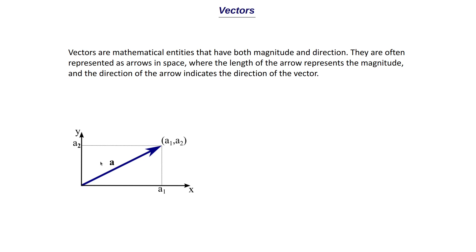Here we have this arrow with a value 'a', which represents the magnitude — let's say that magnitude can be five or six units — and then we have this direction pointing towards it. If you take the angle, let's say 45 degrees, that would be the direction. This is how you represent a vector, with coordinates a1 and a2, representing the vector in the x and y coordinate space.